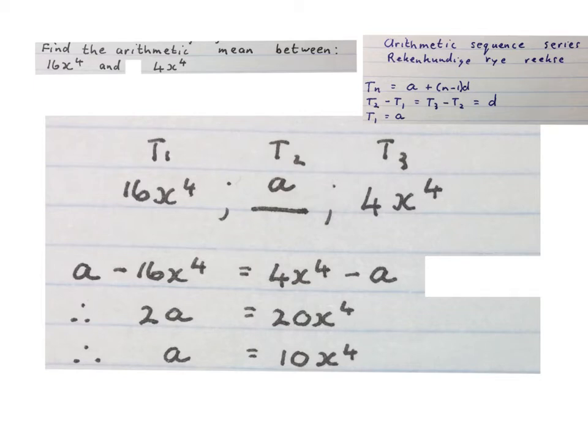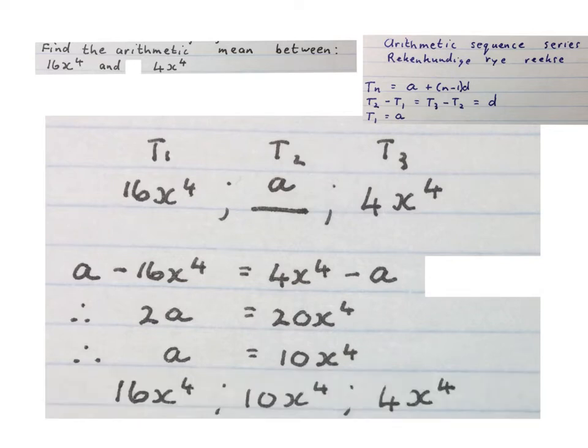Then you write the answer: the arithmetic mean between these two numbers is 10x to the power of 4. Then you'll see your sequence looks like this. Please stop the video and get your brain around this.